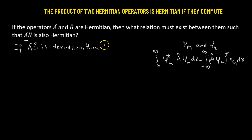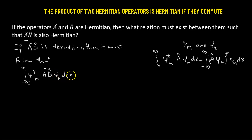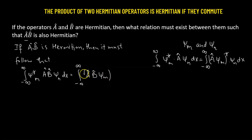then it must follow that the integral going from negative infinity to positive infinity — using this definition — we have psi*_m with the operator AB operating on psi_n dx. This must be equal to the integral going from negative infinity to positive infinity where the operator AB operates on psi_m, we take the conjugate of that, times psi_n dx.